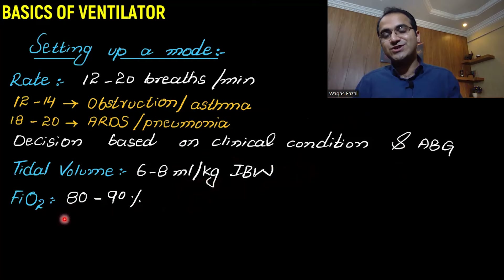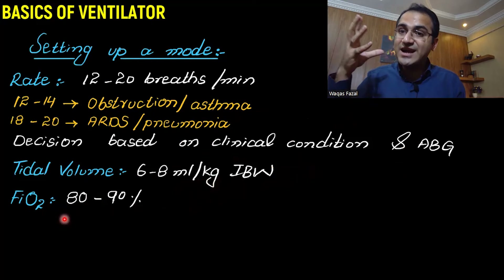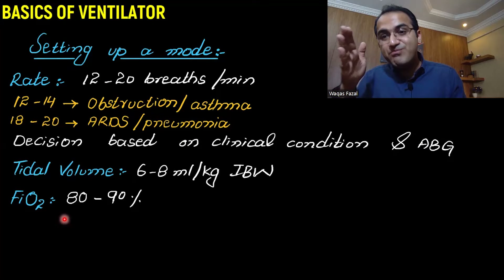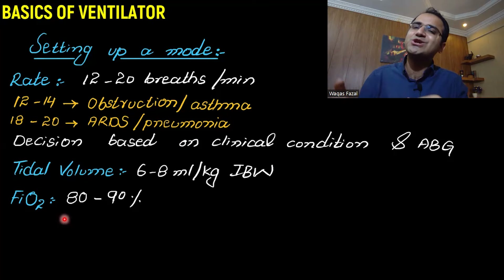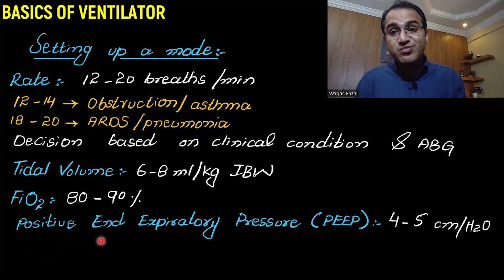Fraction of inspired oxygen — FiO2. Normally the fraction of oxygen in the atmosphere is 21%. But these patients have impaired oxygenation, so we usually start from 80 to 90% and as the patient improves, we slowly and gradually bring it down.